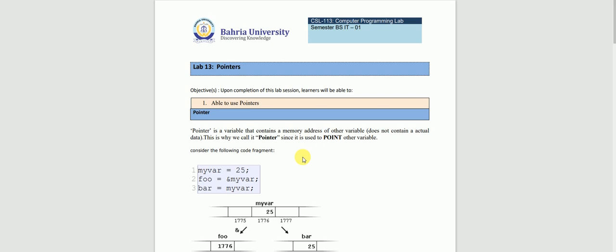If we look at a variable, or if there is any particular person — let's suppose Ali — there will be a lot of people in a society, but we can specifically and uniquely identify him by his address. Similarly, there are many people in a society but we want to point to a specific person and access their address so we can quickly find them.